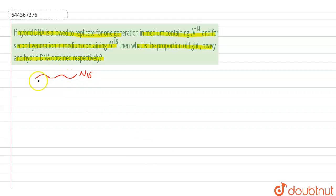And this is the normal one. Normal one means that it is the normal isotope that is N14. Now it says that this is a hybrid DNA. Now this hybrid DNA which contains one strand of N14 and the other strand of N15...